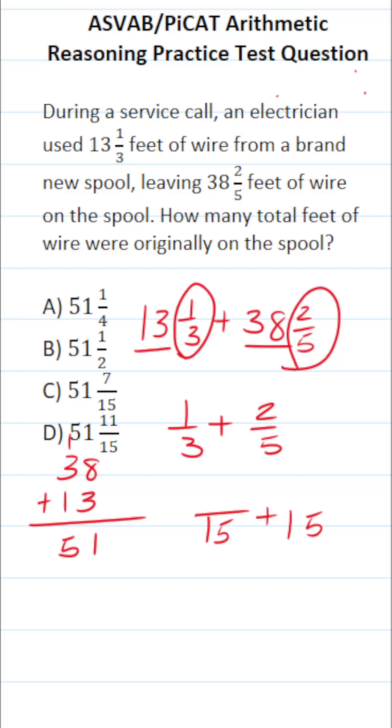To write 3 as 15, we multiply it by 5. We also do that to the numerator, so this becomes 5 over 15. To write 5 as 15, we multiply it by 3. We also do that to its numerator,